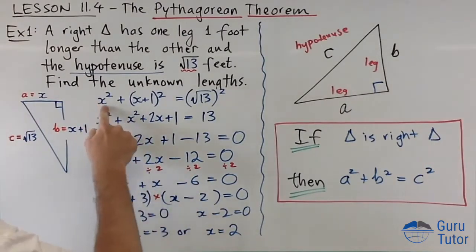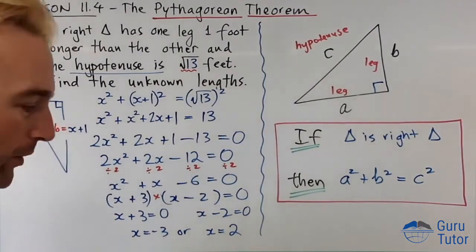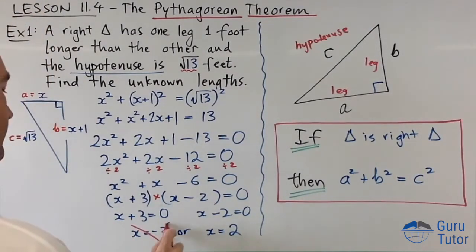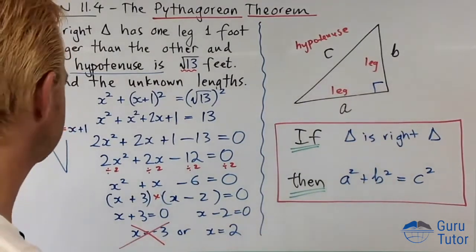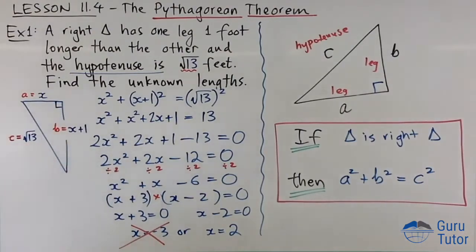Now, are these both valid? Is one extraneous? Well, they're both valid solutions of this equation, but are they valid solutions of this situation here? Can I have a length of negative three? No, okay, so we're going to reject this. We can't have negative lengths in triangles.